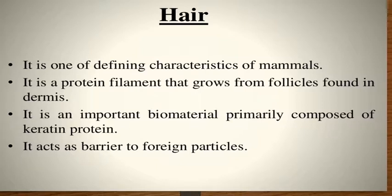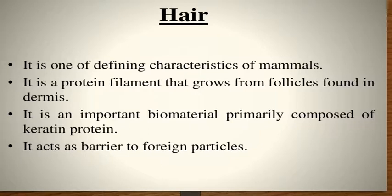Hair is one of the defining characteristics of mammals. It is a protein filament that grows from hair follicles and is found in the dermal layer of the skin. It is an important biomaterial primarily composed of keratin protein, and it acts as a barrier to foreign particles.